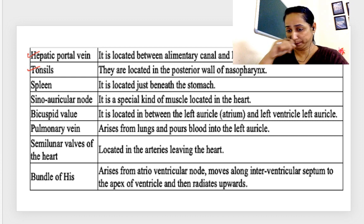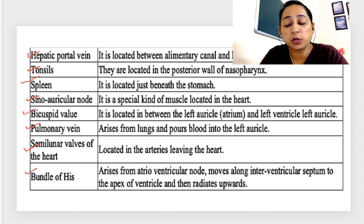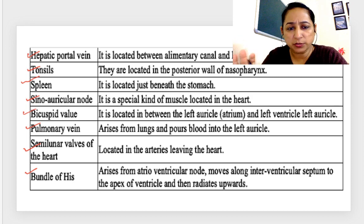Hepatic portal vein, located between alimentary canal and liver. Tonsils, located in the posterior wall of the nasopharynx. Spleen, located beneath the stomach. Sino-auricular node or SA node, a special kind of muscle which is located above the auricle. Bicuspid valve, located between left auricle and left ventricle.